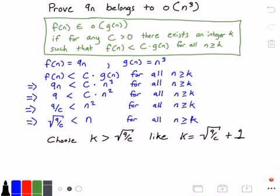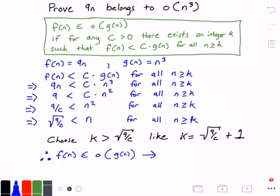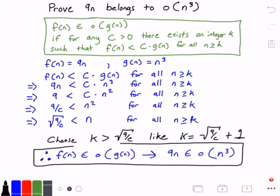We have actually already proven that f(n) belongs to little o of g(n). Therefore, f(n) belongs to little o of g(n), which implies that 9 times n belongs to little o of n cubed. That is our answer — we have proven this.